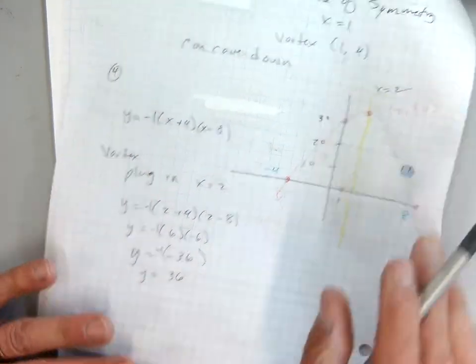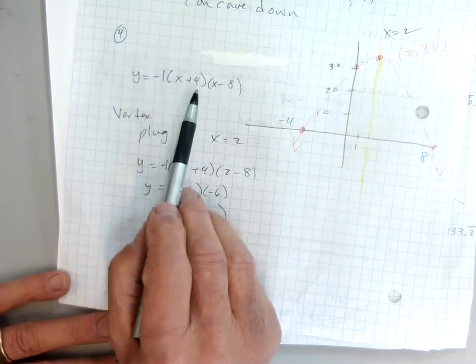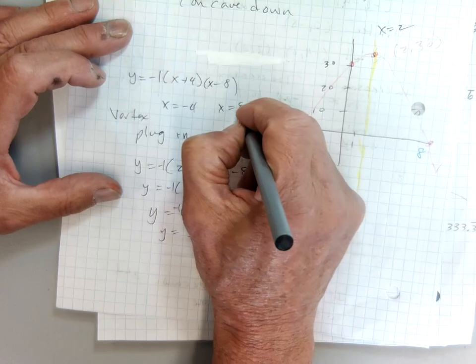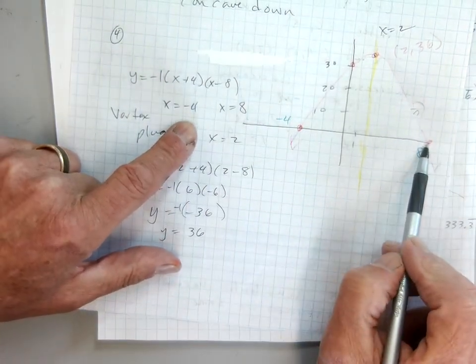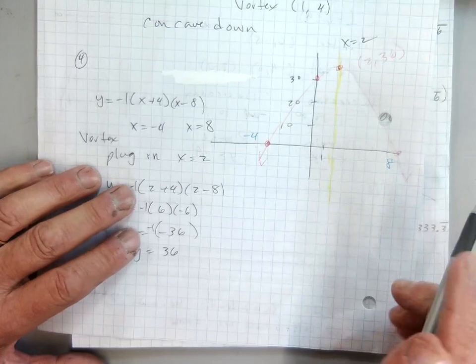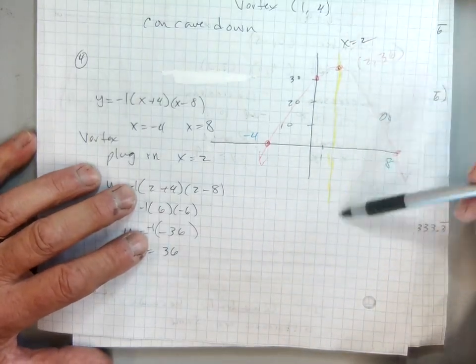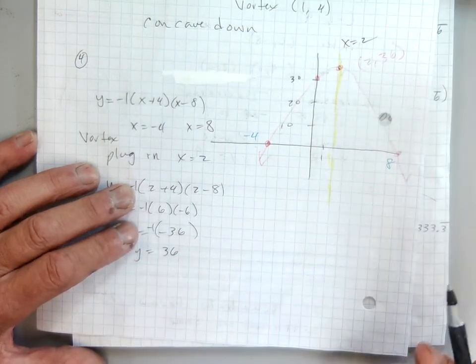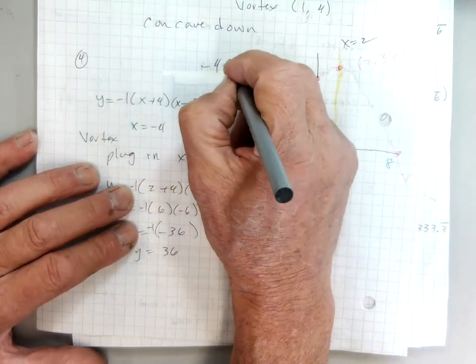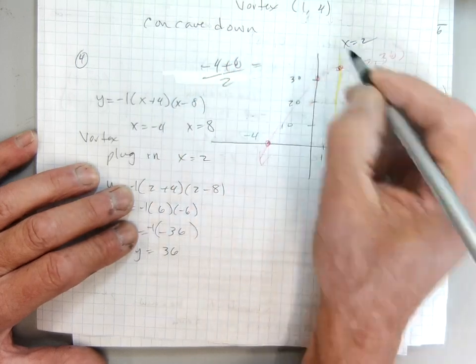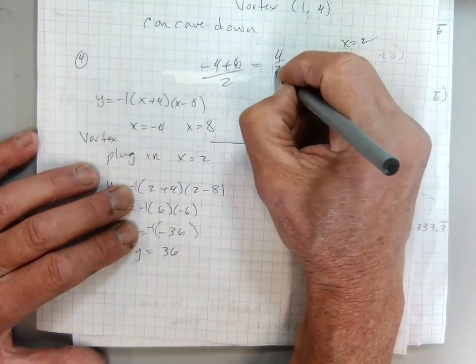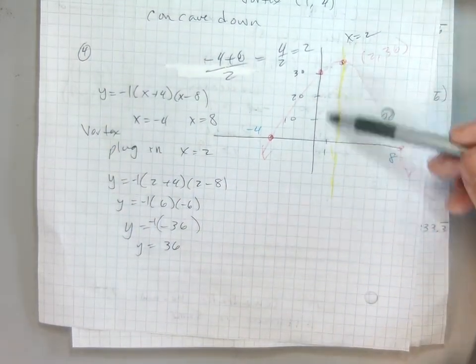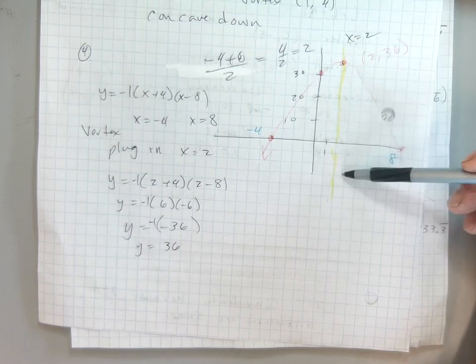Number 4. I know my zeros are at negative 4, x equals negative 4, and x equals positive 8. It's the opposite, right? So there's negative 4 and there's positive 8. The line of symmetry has got to be right smack dab in the middle, so I know it's got to be at 2. You can do the average if you want to. The average would be just negative 4 plus 8 divided by 2, which is 4 over 2, which is 2. So the line of symmetry is in the middle at 2. But I want to know where on this is my vertex. I know somewhere, so I need an equation.